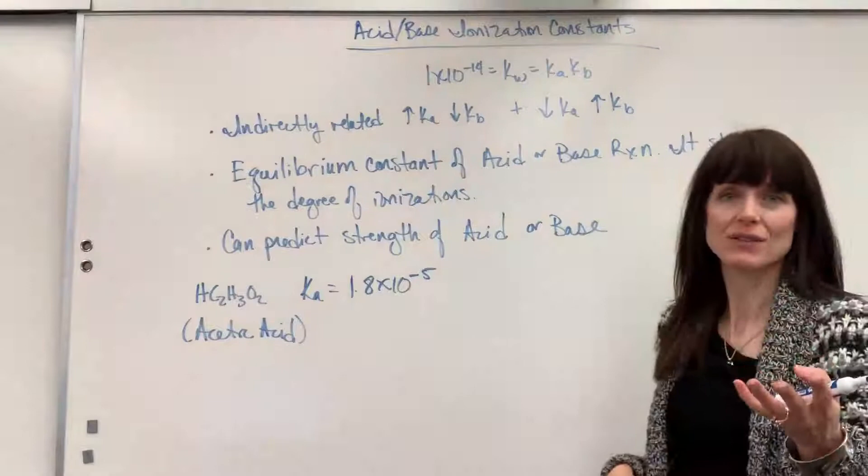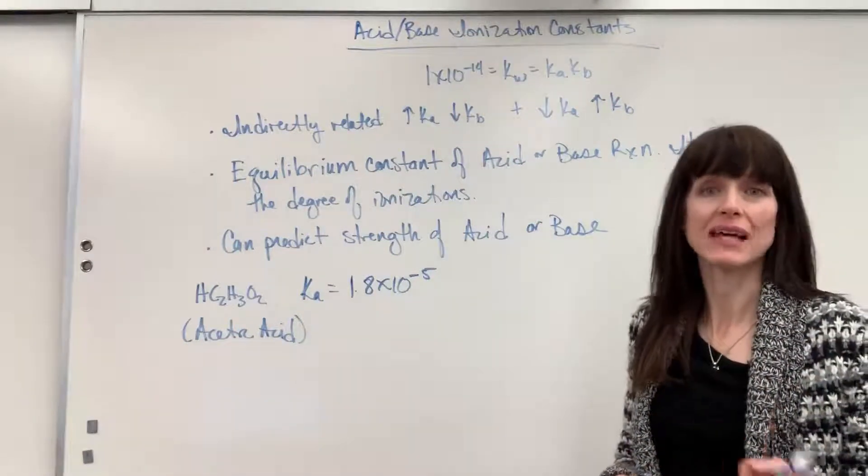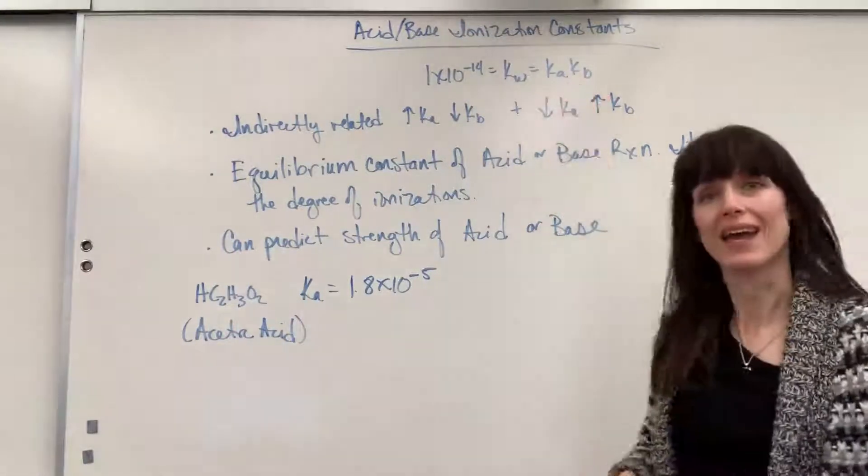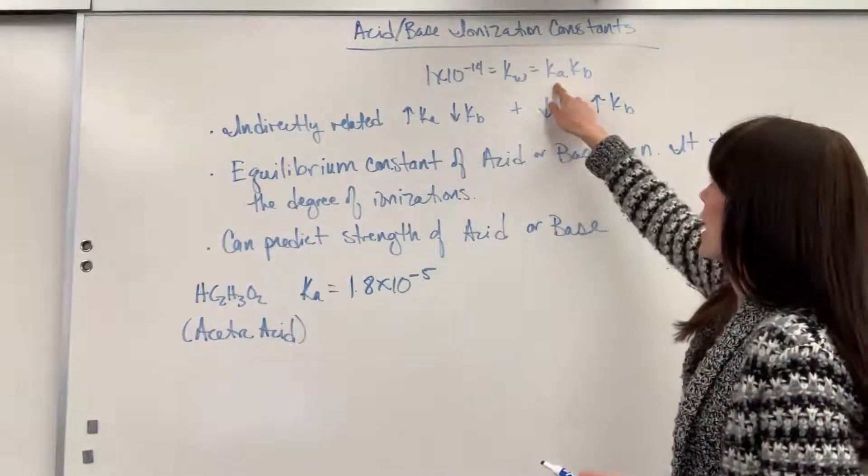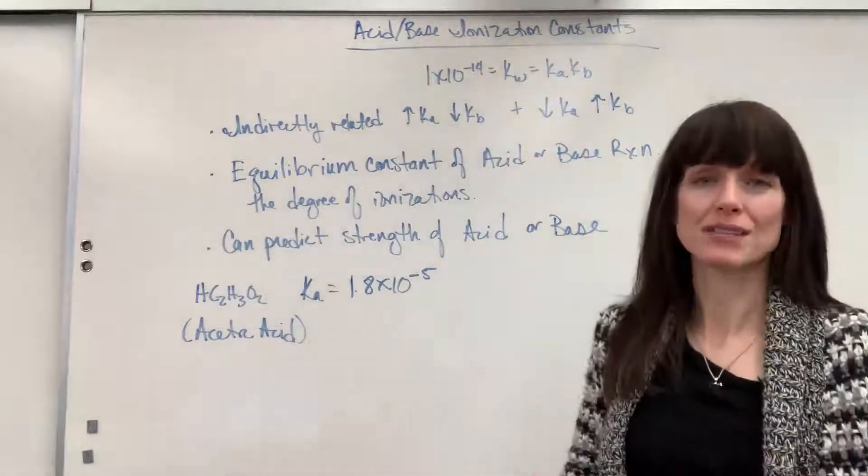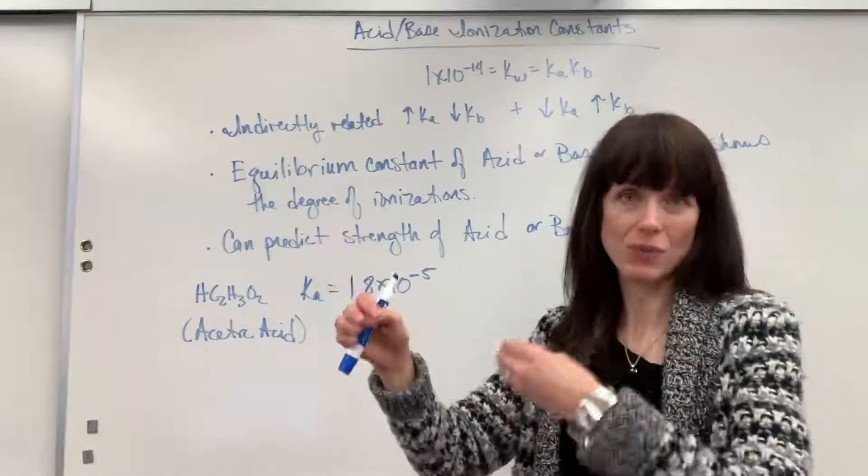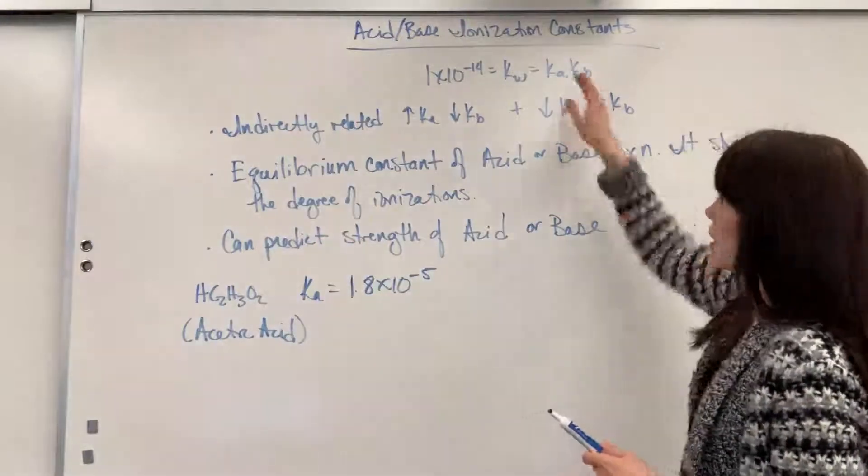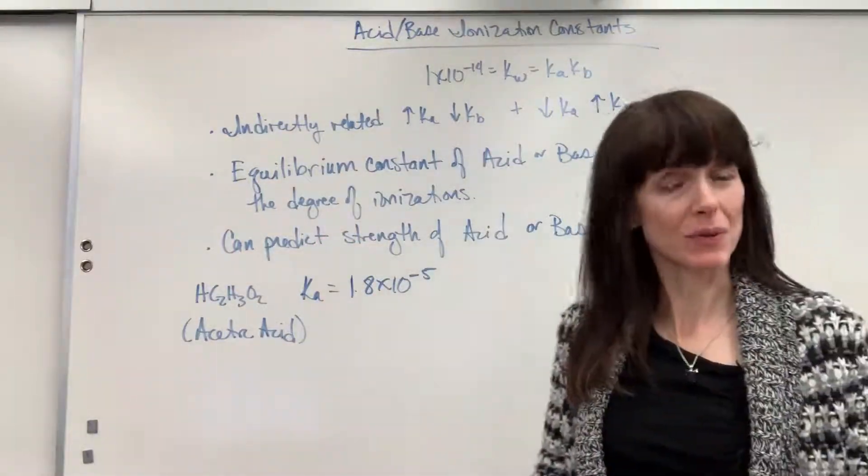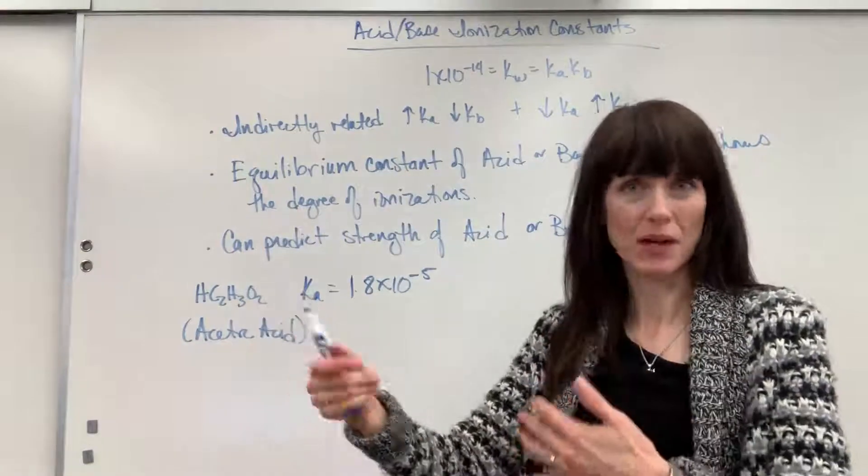If you haven't watched these videos, go to my playlist where it says acid-base equilibrium and you can get more information on Ka and Kb. Ka, that is the equilibrium constant for an acid reaction, acid plus water. Kb, that's the equilibrium constant for a base reaction, a base plus water.